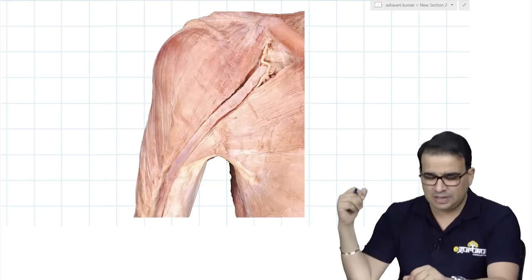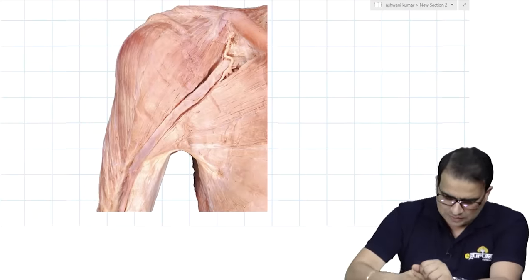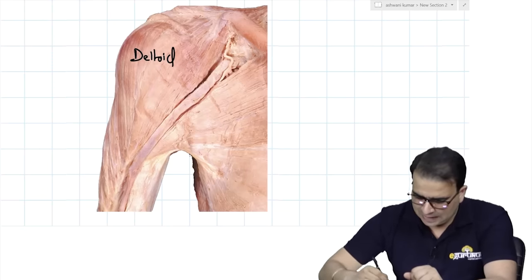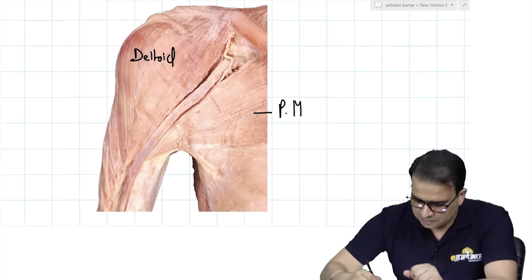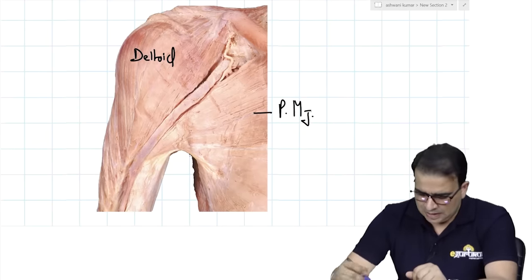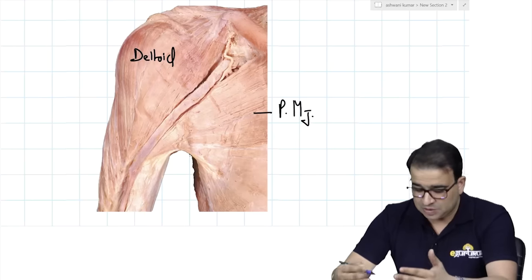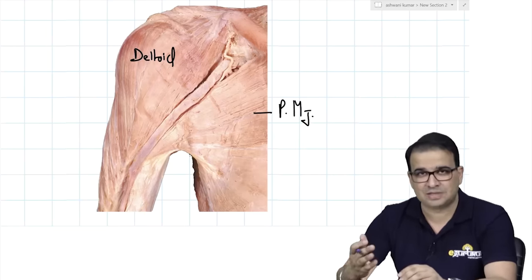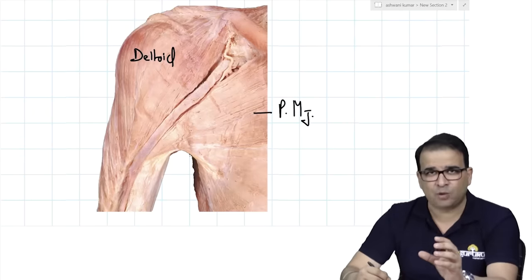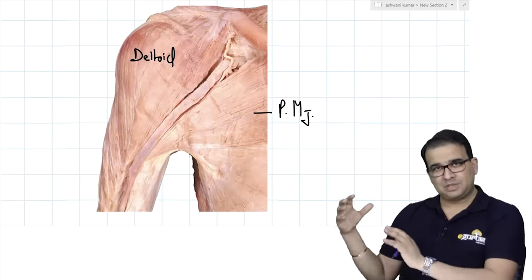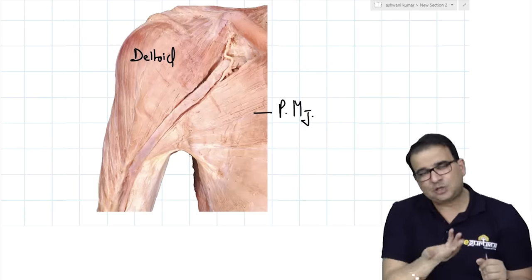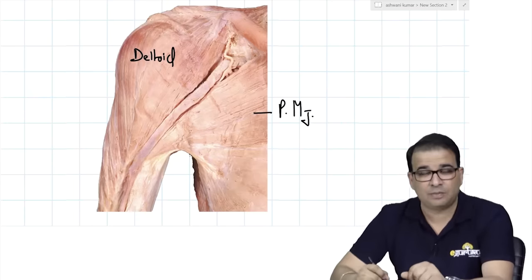The first image shows the deltoid muscle. You can see the anterior fiber of the deltoid and behind it is the pectoralis major. A recent question on pectoralis major asked what type of fibers it has — it is a spiral type of muscle. It has a broad origin but a very narrow insertion. This is because the inserting fibers of pectoralis major actually turn backward and insert into the lateral lip of the bicipital groove.